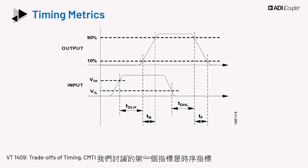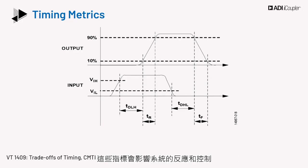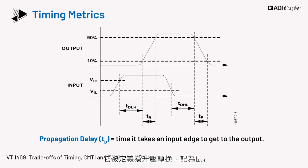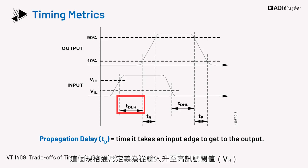The first metrics we will discuss are the timing metrics. These include propagation delay, skew, and pulse width distortion. These metrics affect system response and control. Propagation delay, TD, is the most basic timing parameter and is defined as the time it takes an input edge to reach the output. It is defined for the rising transition, denoted as TDLH, which indicates time delay for low to high. This spec is usually defined as the time between the input reaching the threshold for high signal, VIH.